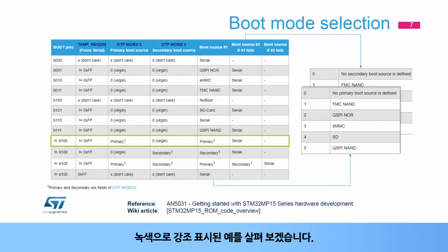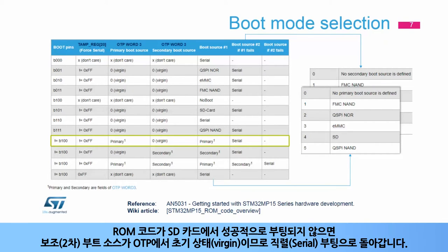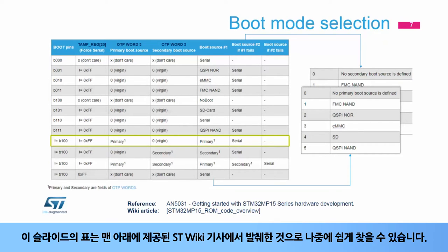Consider the example highlighted in green. To configure your board to always boot on the SD card — that is primary source number 4 in the table — write 4 as the primary boot source code in OTP Word 3. If the ROM code does not succeed to boot on the SD card, then it falls back to a serial boot as the secondary boot source is virgin in OTP. The tables in this slide are copied from the ST Wiki article given at the bottom of this slide.